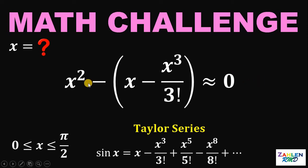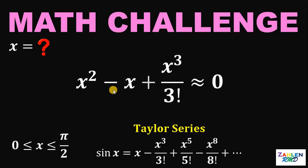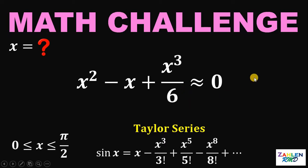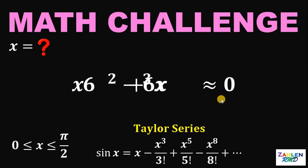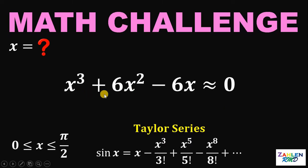Our equation becomes x squared minus the quantity x minus x cubed over 3 factorial, approximately equal to 0. Let's distribute the negative sign. This gives us x squared minus x plus x cubed over 3 factorial. Since 3 factorial is just 6, let's multiply all terms by 6 and rearrange, giving us x cubed plus 6x squared minus 6x approximately equal to 0.